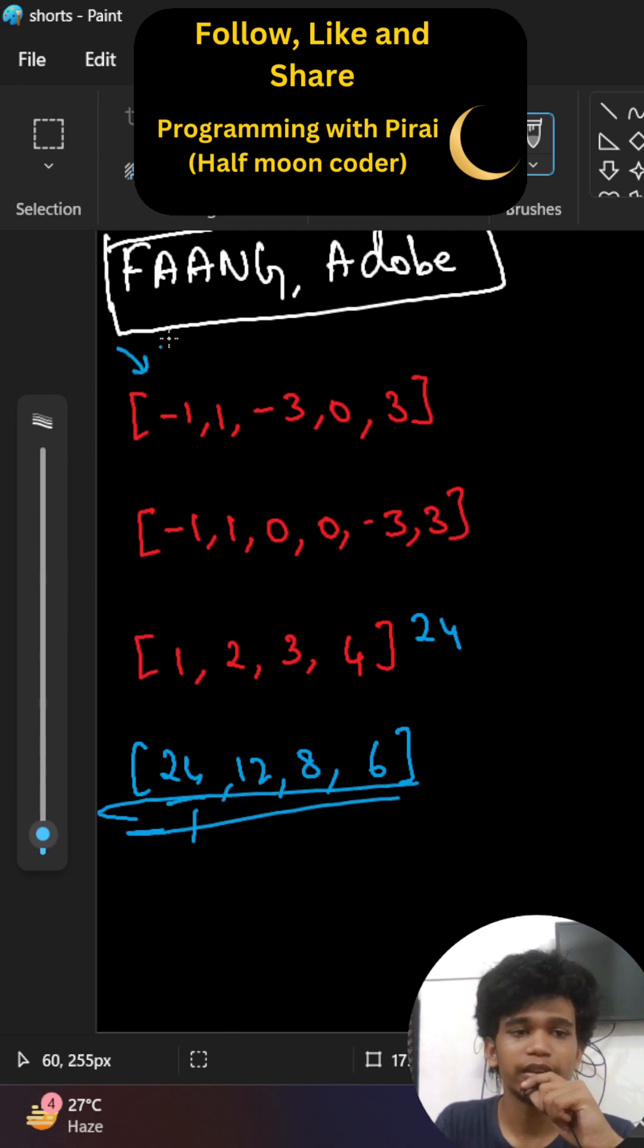But for this scenario, it will change because here comes 0, which makes our product as 0. Initially, we want to count how many number of 0 are there. If it is one number of 0,